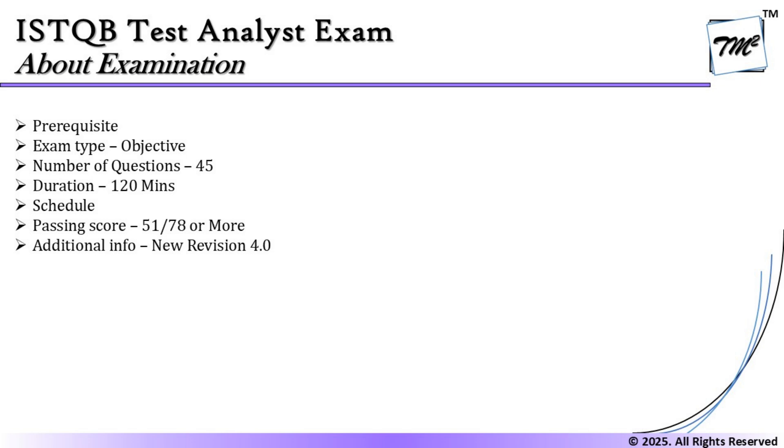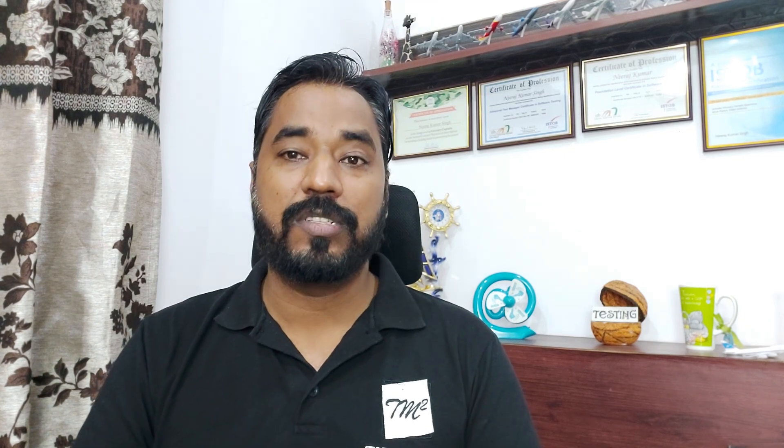The exam type is objective, meaning multiple choice questions. You will be given four or five options per question. Where you see four options, you select one right answer; where you see five options, you select two right answers. You will have a blend of both. In foundation there were only two such questions out of 40, but here many questions will have five options, so be extra cautious about how many answers to select.